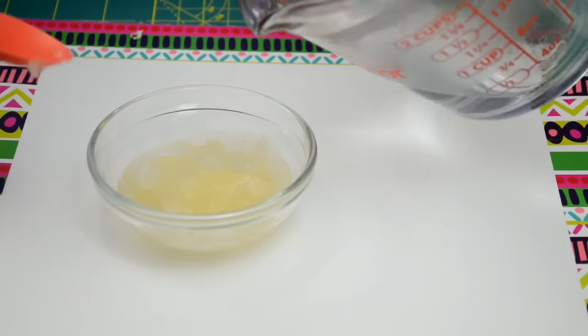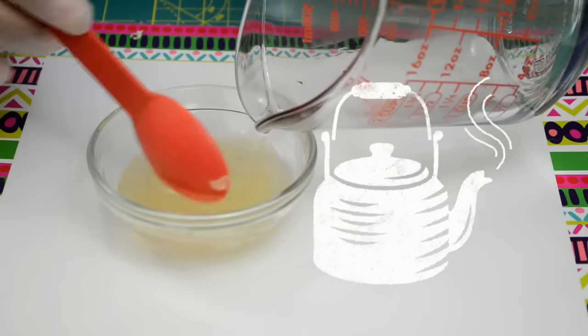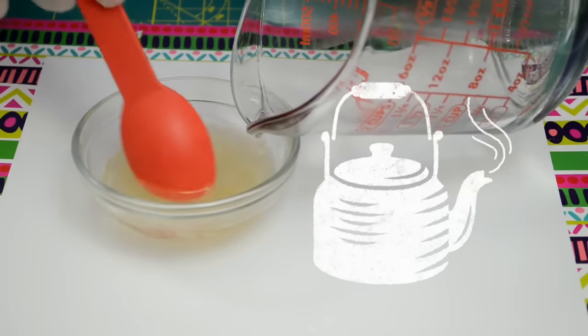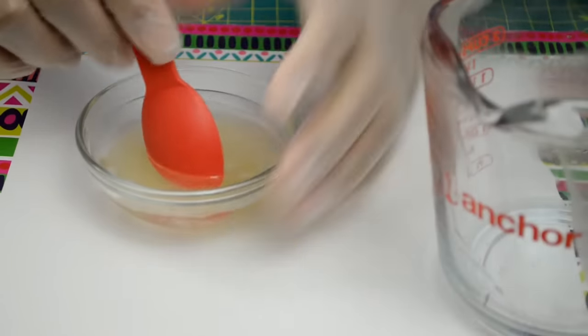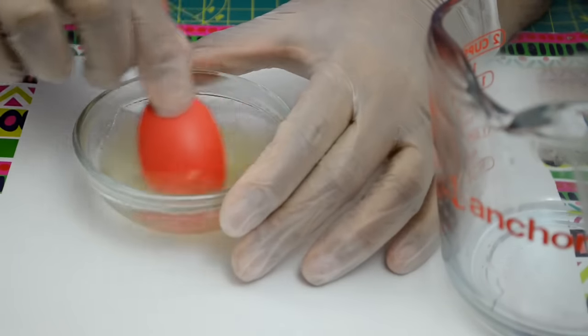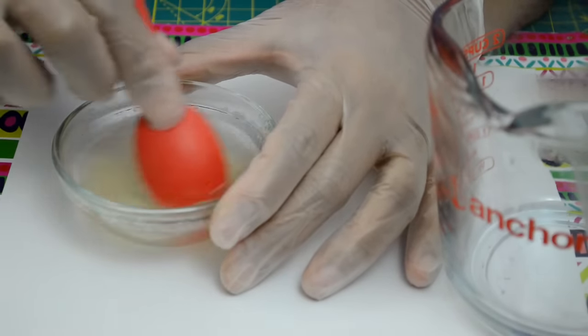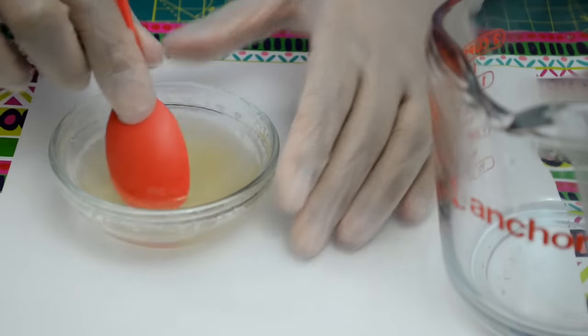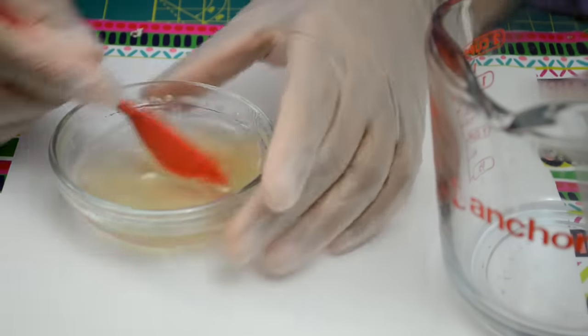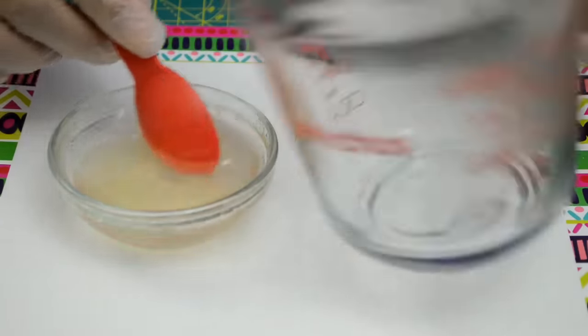In the meantime, heat the rest of the water in the microwave or over the stove. Do not bring to a boil, just heat it up. Pour the hot water over the hydrated gelatin and dissolve well. Let it cool down, but do not let it harden.